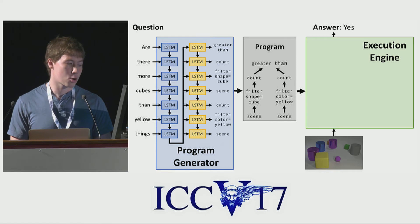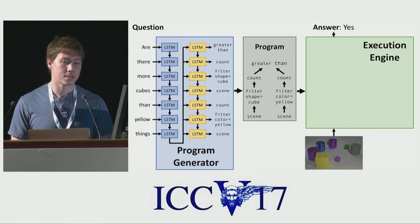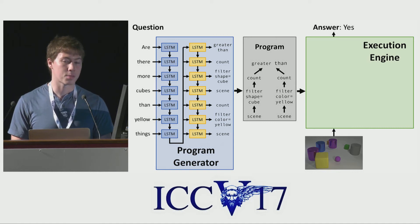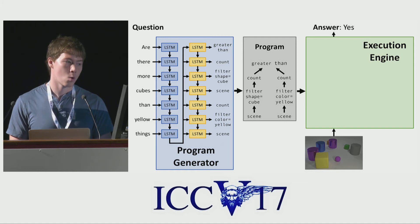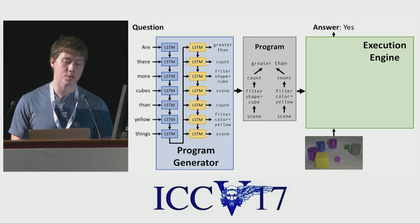More concretely, the program generator is implemented as a sequence-to-sequence LSTM model, where one LSTM reads the text of the question one word at a time and produces the program one basic functional unit at a time. One interesting point here is that our programs in general might be tree-structured. So to get around this, we have our program generator produce a prefix traversal of the tree.